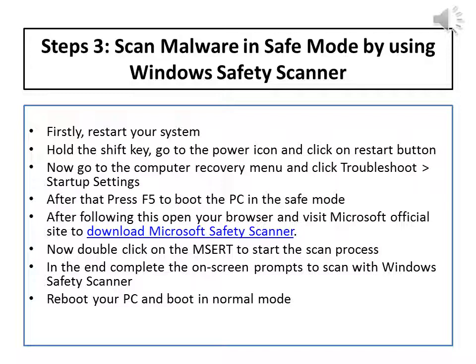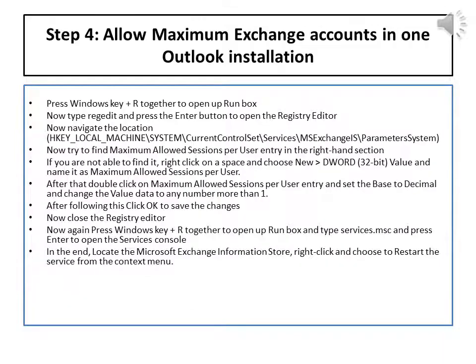After booting into Safe Mode, open your browser and visit the Microsoft official site to download Microsoft Safety Scanner. Double-click on the installer to start the scan process. Complete the on-screen prompts to scan with Windows Safety Scanner, then reboot your PC and boot in normal mode.